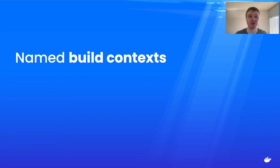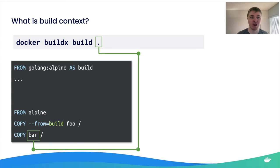Let's talk about a new feature called named build contexts. A build context is the path you pass when running the build command — it's where files used in COPY instructions come from. Currently, you can only pass one build context, so all files used in your build need to be somewhere inside that path, which is quite limiting for many project layouts.